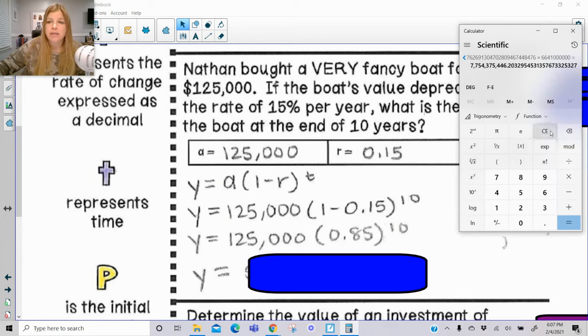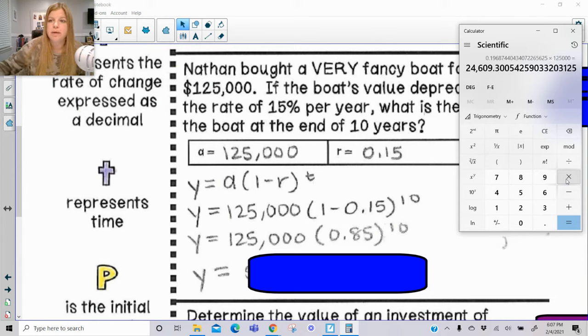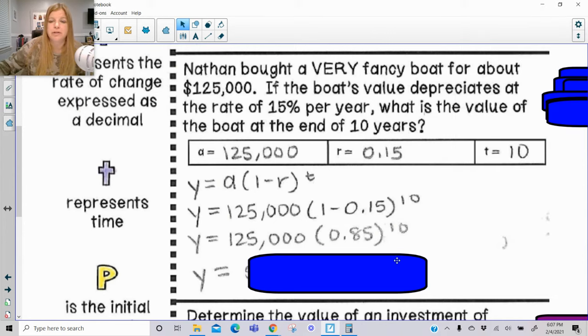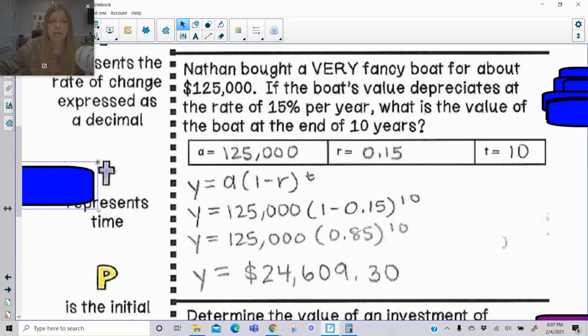So now calculator, 0.85, X to the Y, 10, press enter, leave it fresh in your calculator, don't round the thing, times 1, 2, 5, 0, 0, 0, and this is what I get, $24,609.30, which is exactly what I have here.